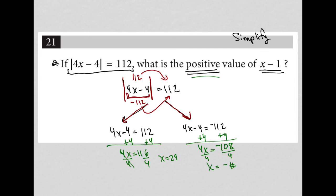So even if I did solve it, let's just do it. 108 divided by 4, 27. So this ends up giving me a negative 27.